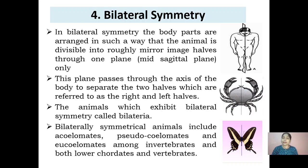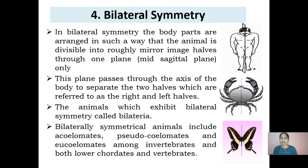In bilateral symmetry, the body parts are arranged such that the animal is divisible into roughly two mirror image halves through one plane — mostly the mid-sagittal plane. This plane passes through the axis of the body to separate the two halves, referred to as the right and left half. When the body is cut into two halves we get exactly the right and left half. Animals which exhibit bilateral symmetry are called bilateria.